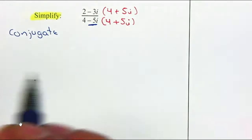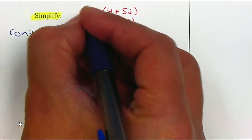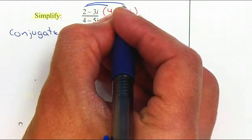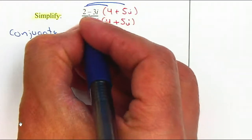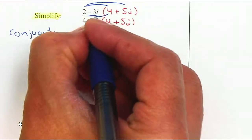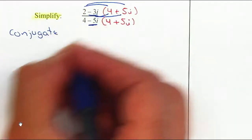From here we just multiply using FOIL. Multiply 2 times 4, and 2 times 5i. Then multiply negative 3i times 4, and negative 3i times 5i. Let's do it underneath.